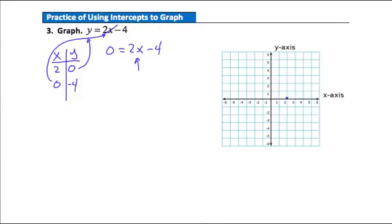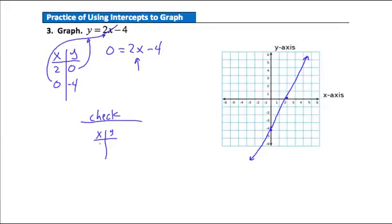So now let's plot these two points: over 2, up 0 for the x-intercept, and over 0, down negative 4 for the y-intercept. Now let's check a point. If I pick x equals 1, then y equals 2 times 1 minus 4, which is 2 minus 4, giving us negative 2. So my checkpoint is the point (1, negative 2) — over 1, down negative 2. That's right in line with my other points, so I'm confident in my answer.